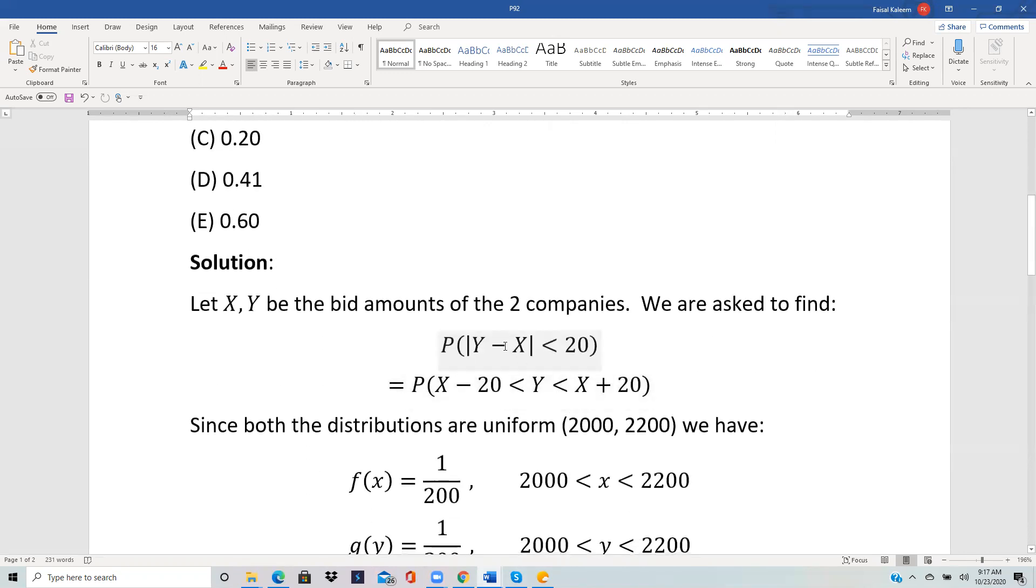When you open the absolute value, you will have negative 20 on one side and 20 on the other. Then when you add the X, you get X minus 20 and X plus 20 is what Y is in between.